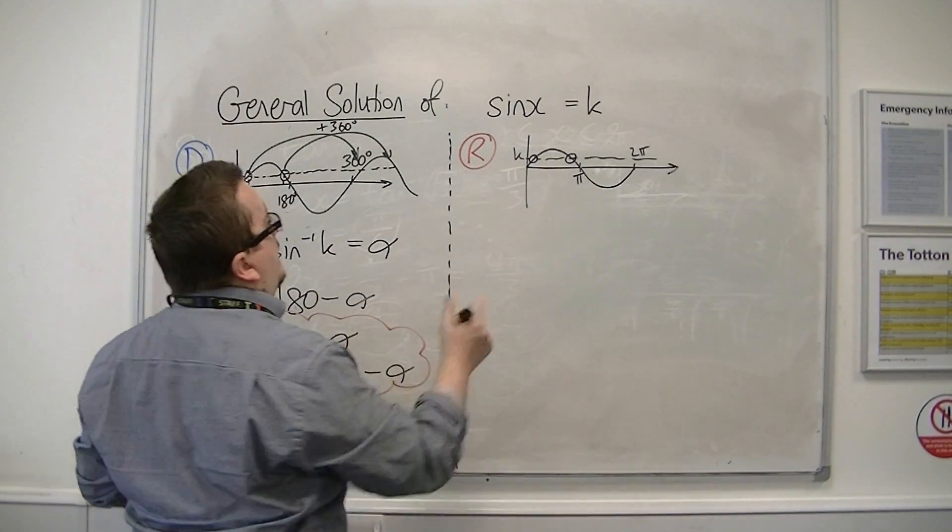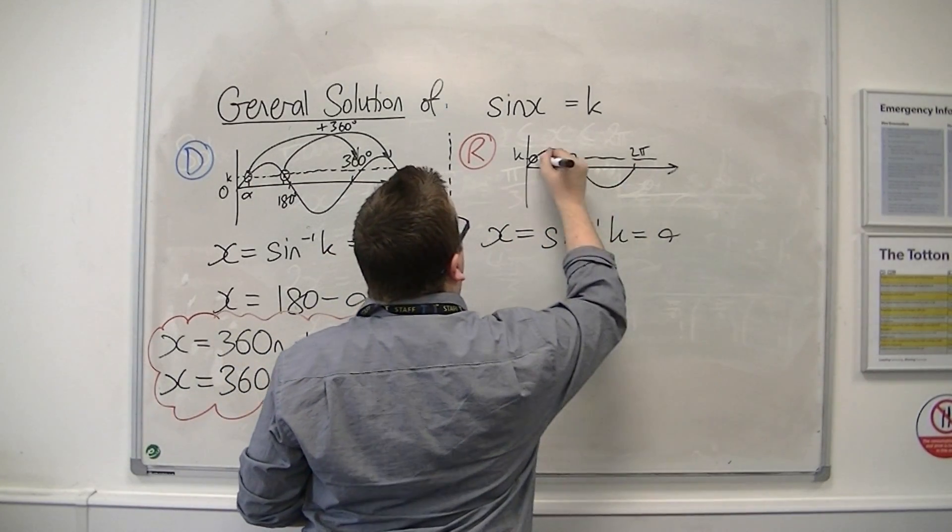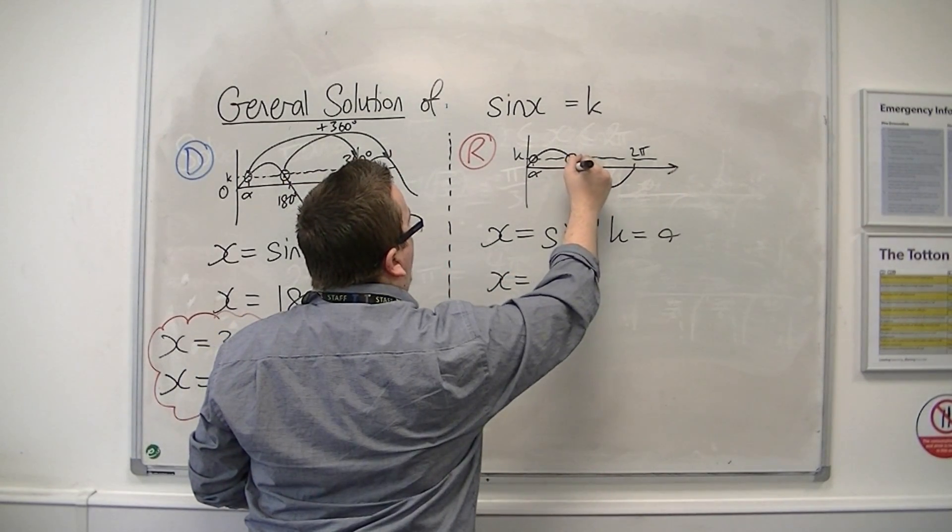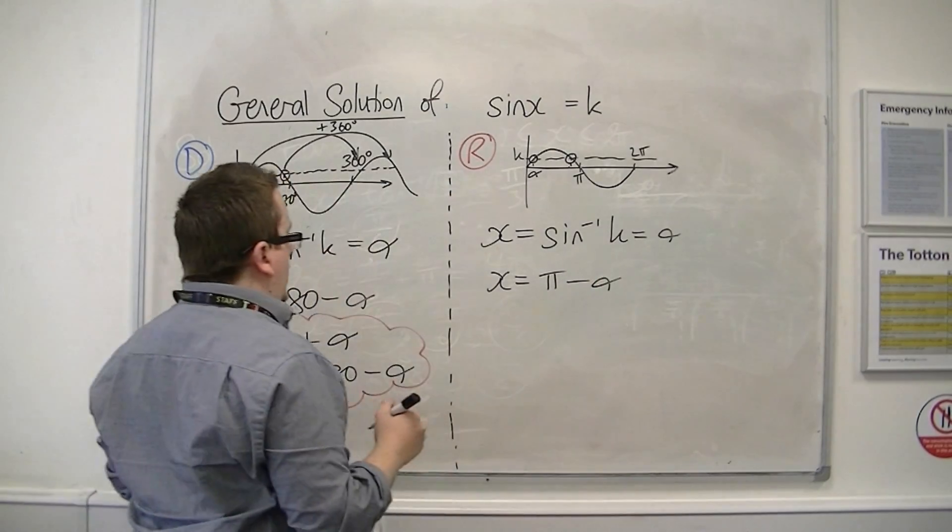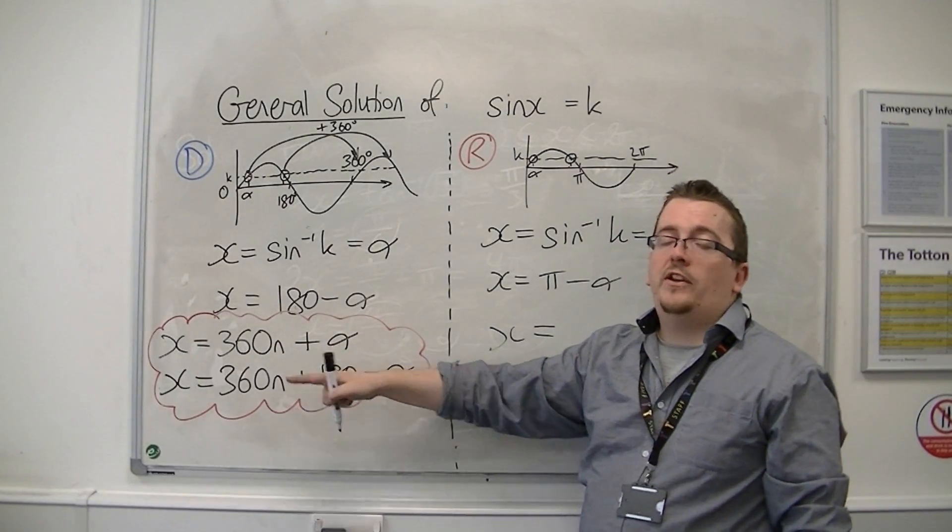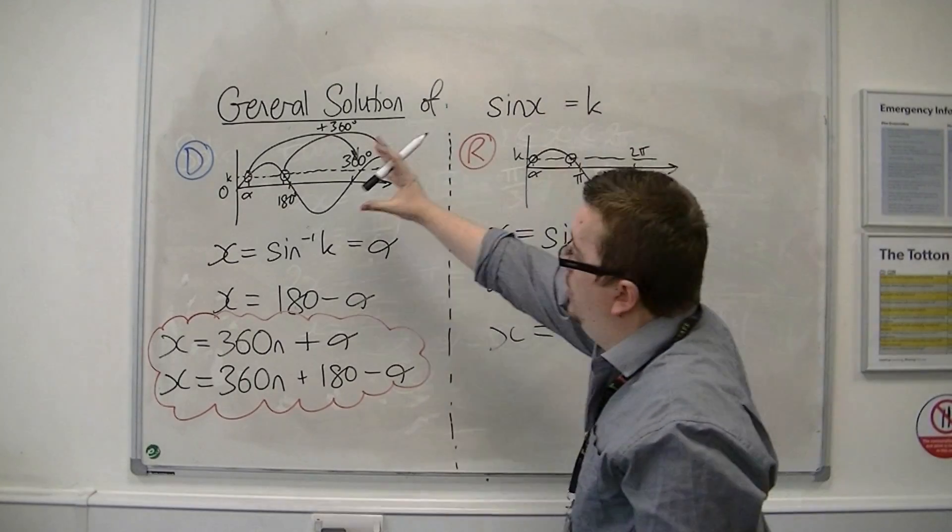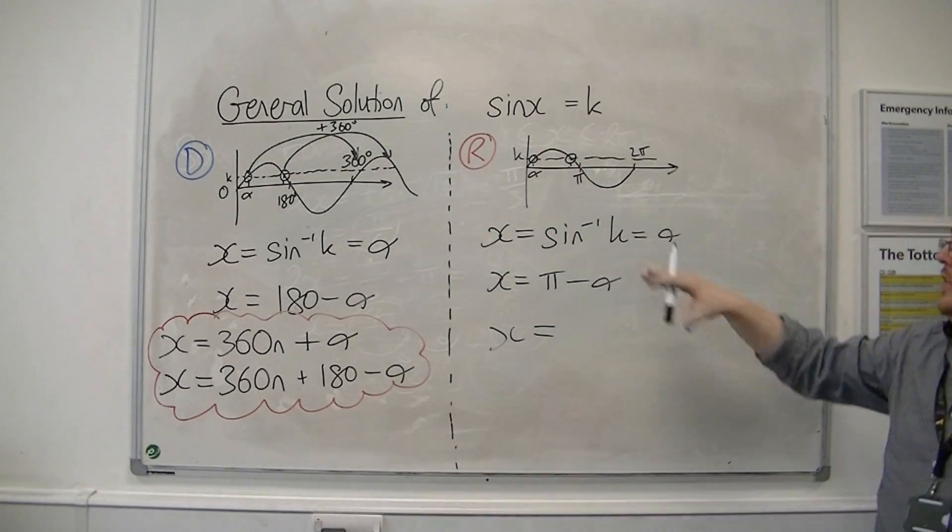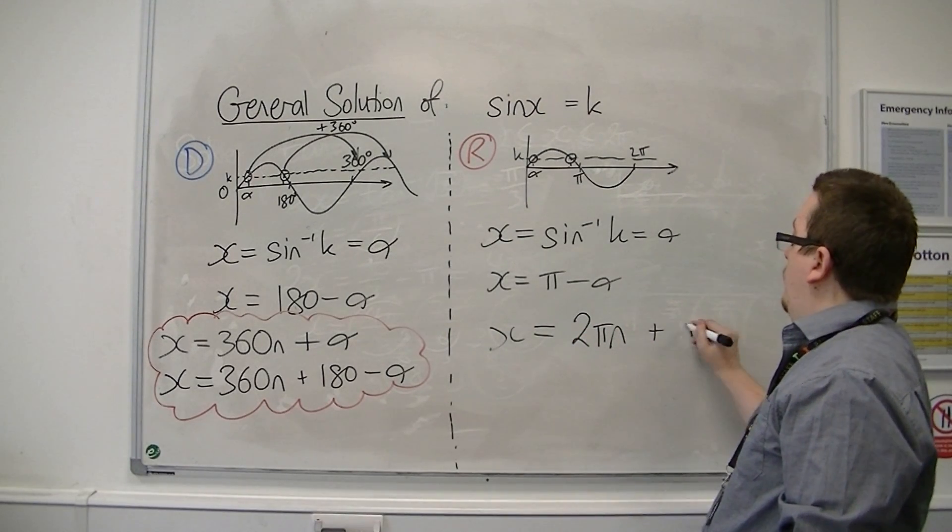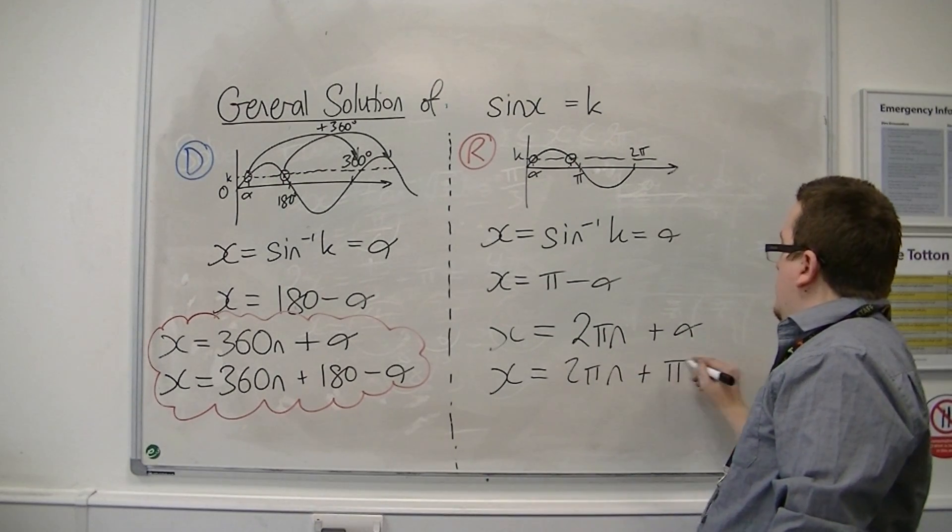The only difference here is that when I'm going to write this down, I'm still going to say that one's alpha. But x can also be π minus alpha. And so the generalized form, if instead of 360, I'm now working with 2π. I'm going to add or subtract multiples of 2π to these solutions. So it would be 2πn plus alpha, or 2πn plus π minus alpha.